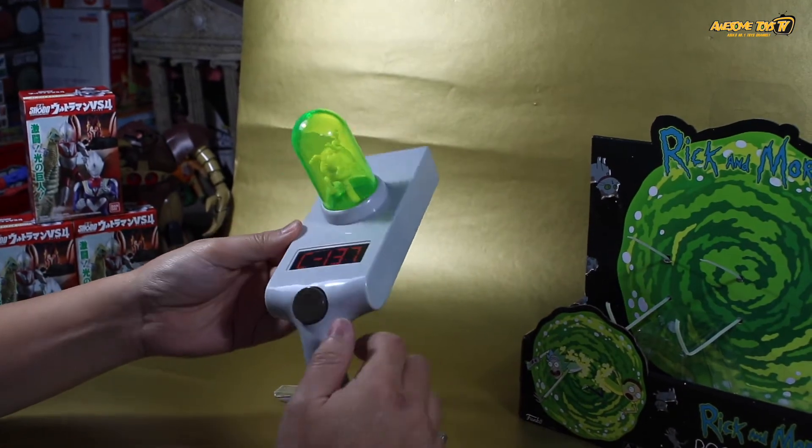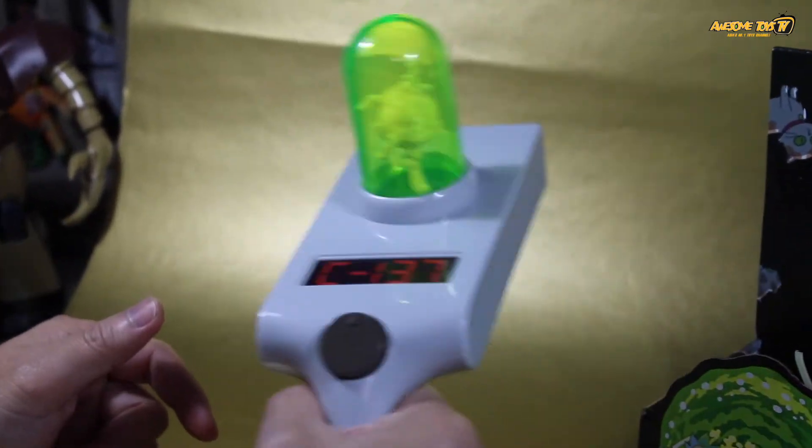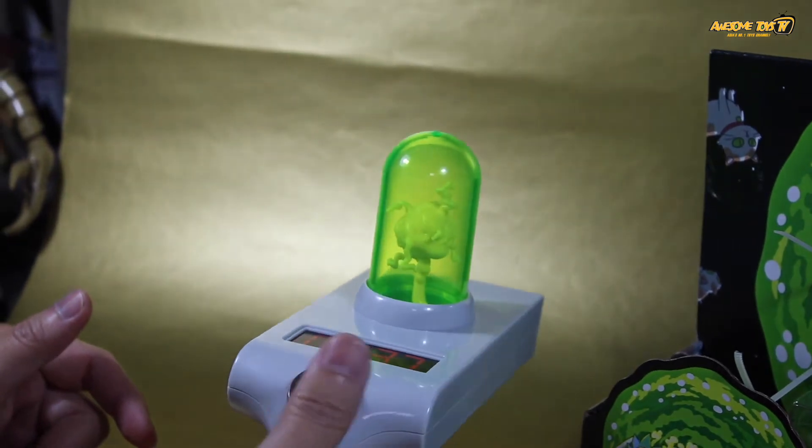Here it says C137. That's the home planet of Rick and Morty. It fits right into an adult hand, so it's actually pretty big. I'm not sure whether it will be good for kids though, but let's try it out.